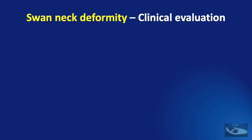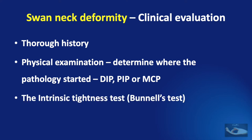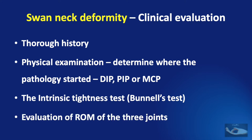When a patient presents with a swan neck deformity, we need to find exactly which joint the pathology started. A thorough history is very important, as a mallet finger deformity can be elicited even from the history. Physical examination will entail evaluating the distal and proximal interphalangeal joints and the metacarpophalangeal joints. To determine whether the intrinsic muscles are tight, we need to perform the Bunnell test and also evaluate the range of motion of the three joints.